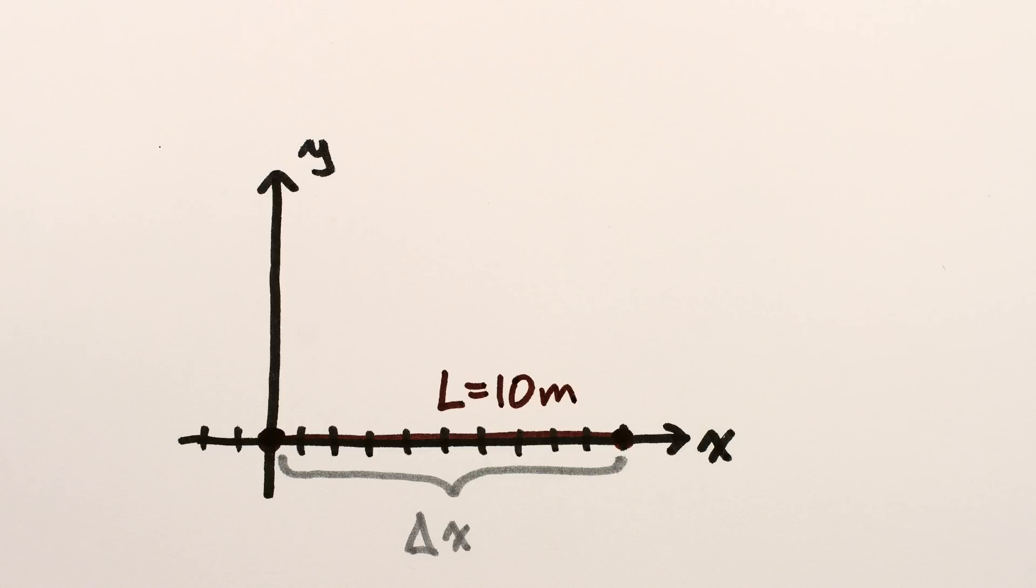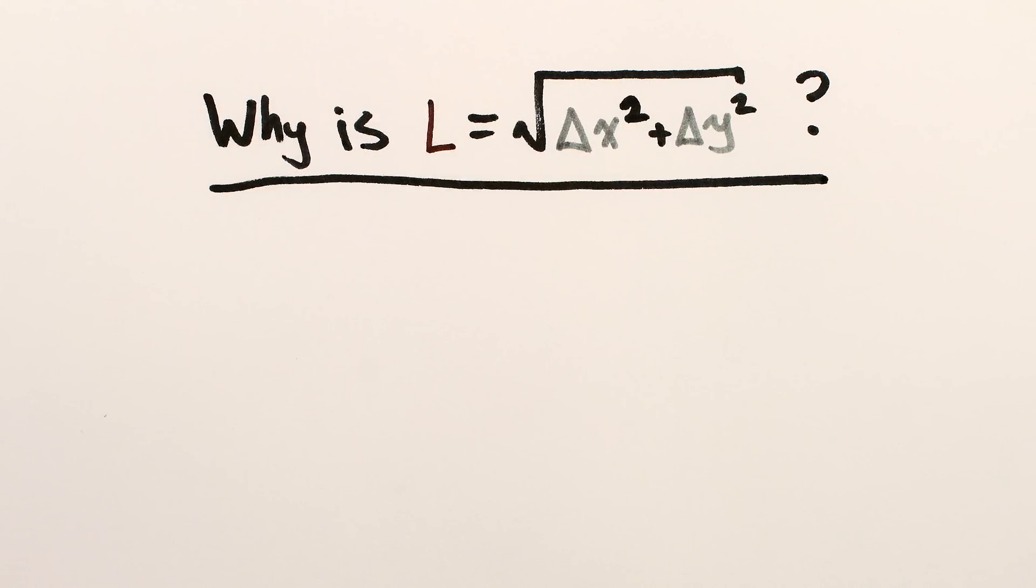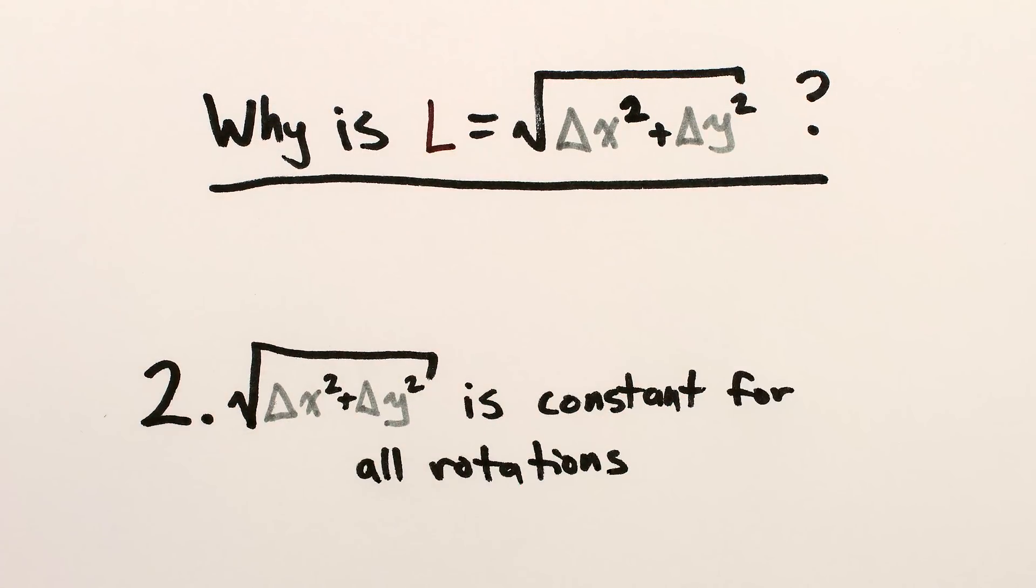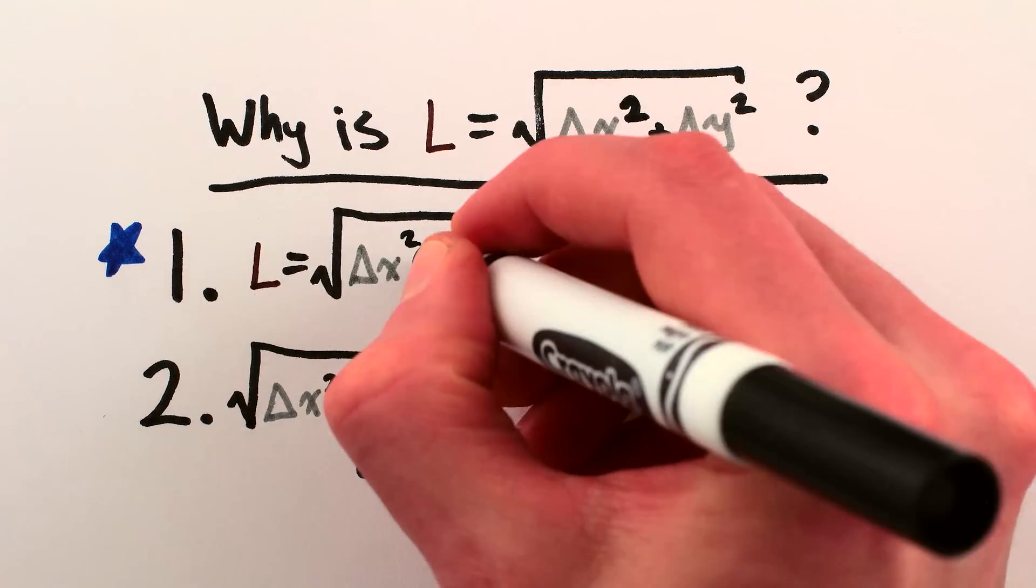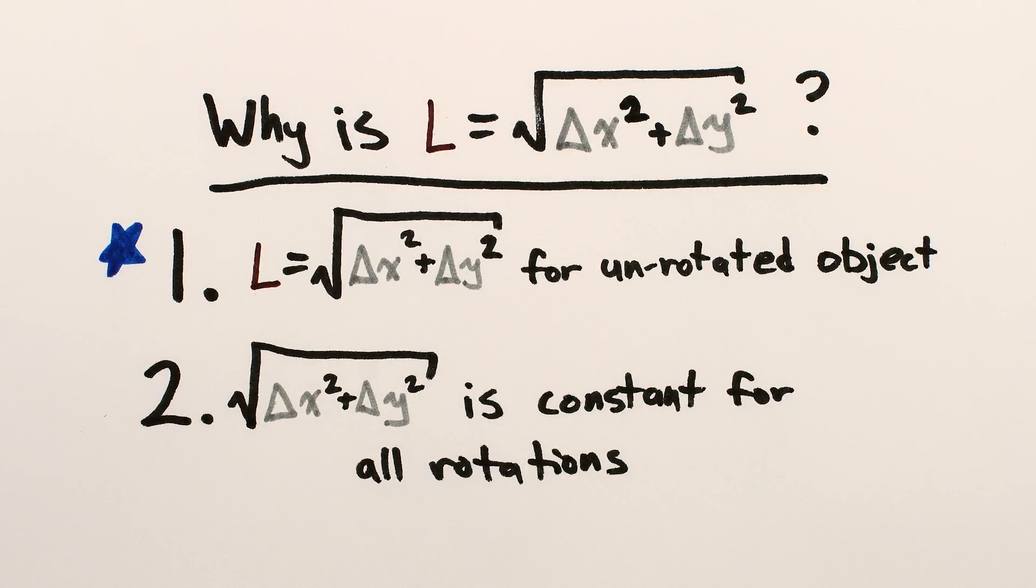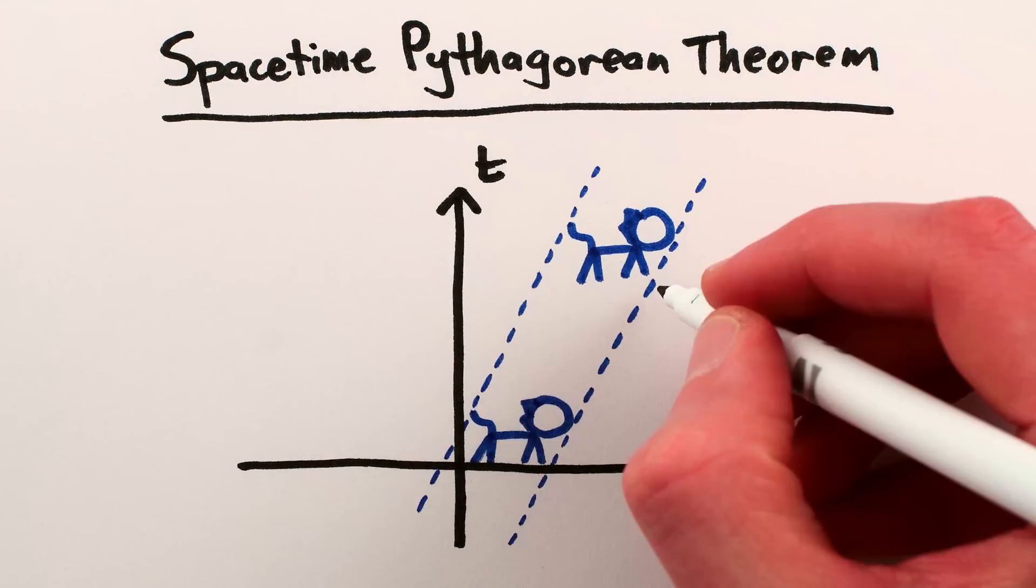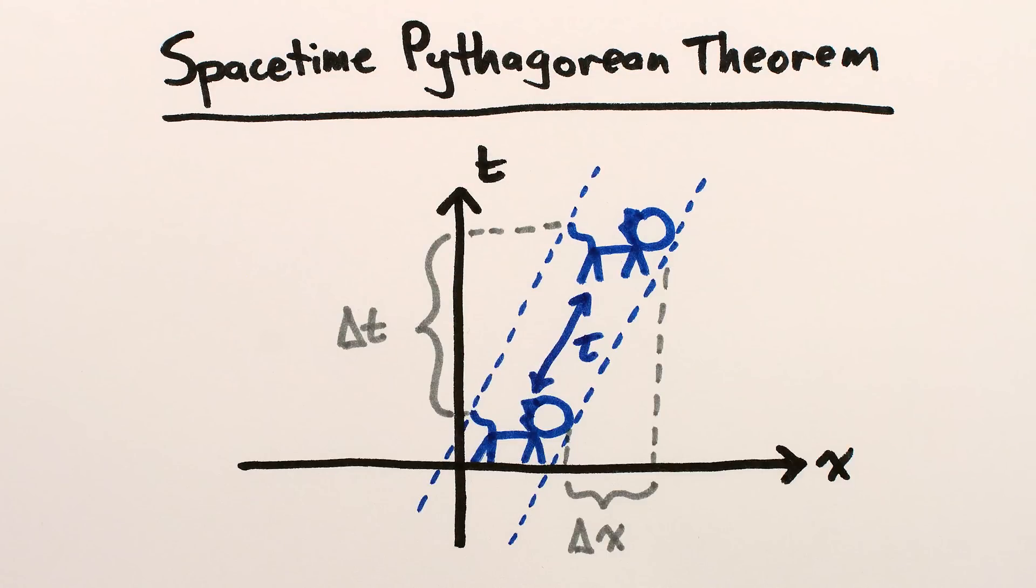In some sense, this is what gives us justification to use the Pythagorean theorem to calculate the length of rotated things. Sure, it's important that the Pythagorean theorem always gives the same answer regardless of the rotation, but it's critical that it agrees with the actual length we measure when the object isn't rotated. And it turns out there's a version of the Pythagorean theorem for lengths and times in spacetime that allows us to measure the true lengths and durations of things.